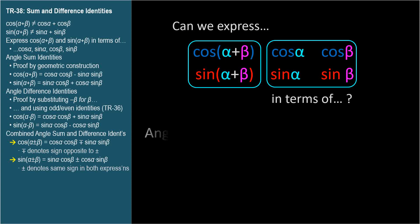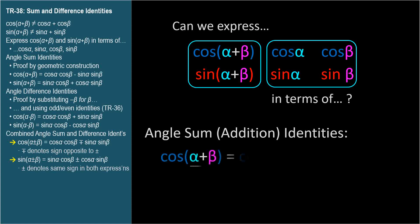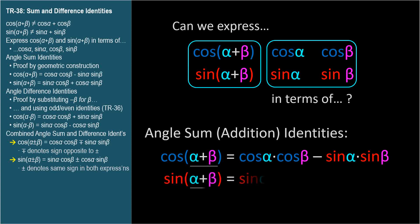Here are the angle addition identities: cosine of alpha plus beta equals cosine alpha times cosine beta minus sine alpha times sine beta. And sine of alpha plus beta equals sine alpha times cosine beta plus cosine alpha times sine beta.